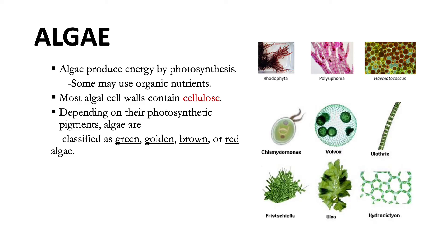Algae produce their energy by photosynthesis, using energy from the sun, carbon dioxide, water, and other inorganic nutrients from the soil to build their own cellular materials. Most algal cells contain cellulose, a polysaccharide not found in cell walls of any other microorganisms.